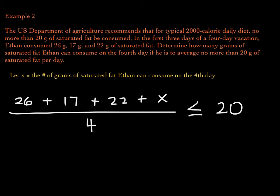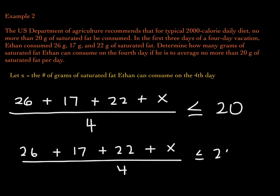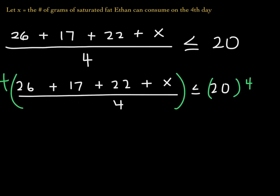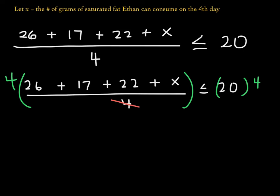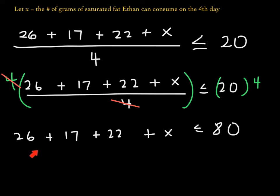To solve this, I want to get rid of the fraction, so I'm going to multiply both sides by 4 — that's the only denominator in this problem. On the left-hand side, the 4s cancel, leaving 26 plus 17 plus 22 plus X is less than or equal to 80. I need to add 26, 17, and 22, which gives us 65. So now we have 65 plus X is less than or equal to 80.